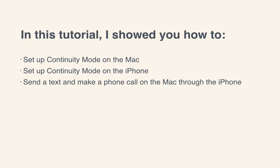You may not notice how much of a time saver being able to keep your iPhone in your pocket while working really is until you try it. Whenever you receive a phone call or text, you can immediately deal with it without having to fumble around for your phone. Being able to see the caller and send them to voicemail is also incredibly time saving. In this tutorial, I showed you how to set up Continuity Mode on your Mac, set it up on your iPhone, and send a text and make a phone call on the Mac through the iPhone. Yosemite's new Continuity Mode will be hands down the best addition to your workflow. Set up Continuity Mode for yourself and give it a spin. Let me know how it goes in the comments below. Thanks for watching.